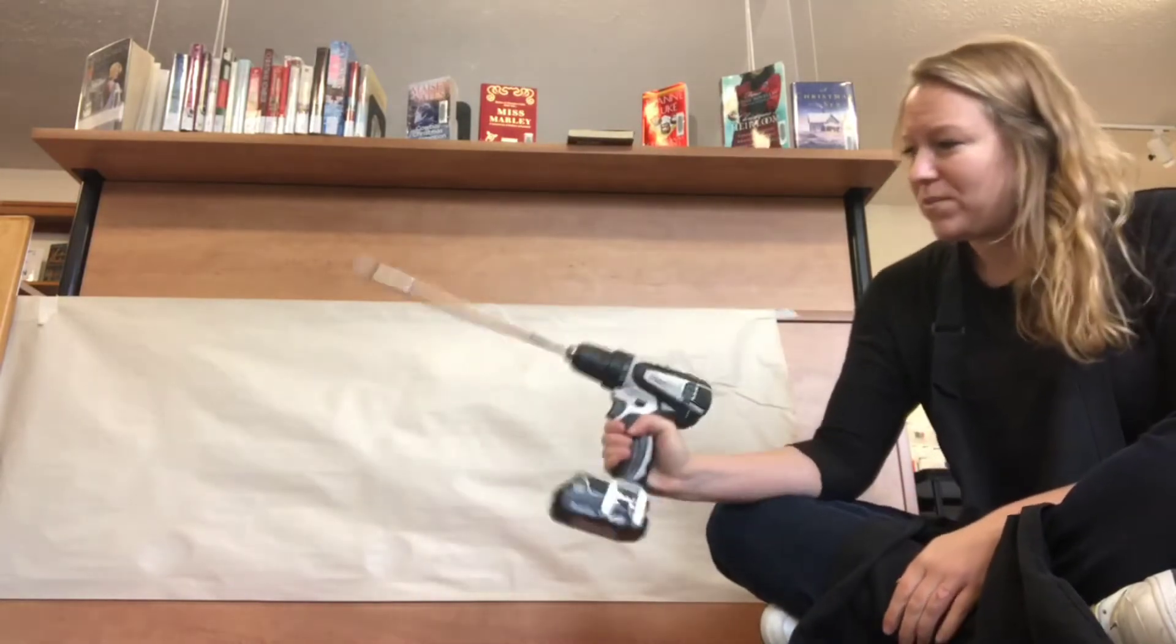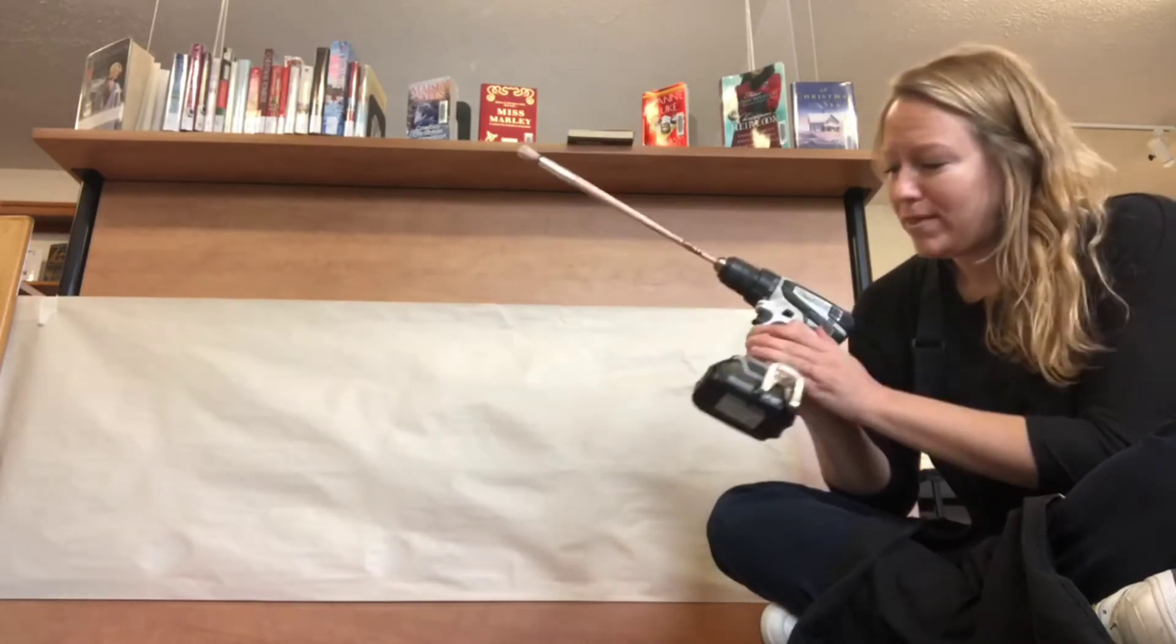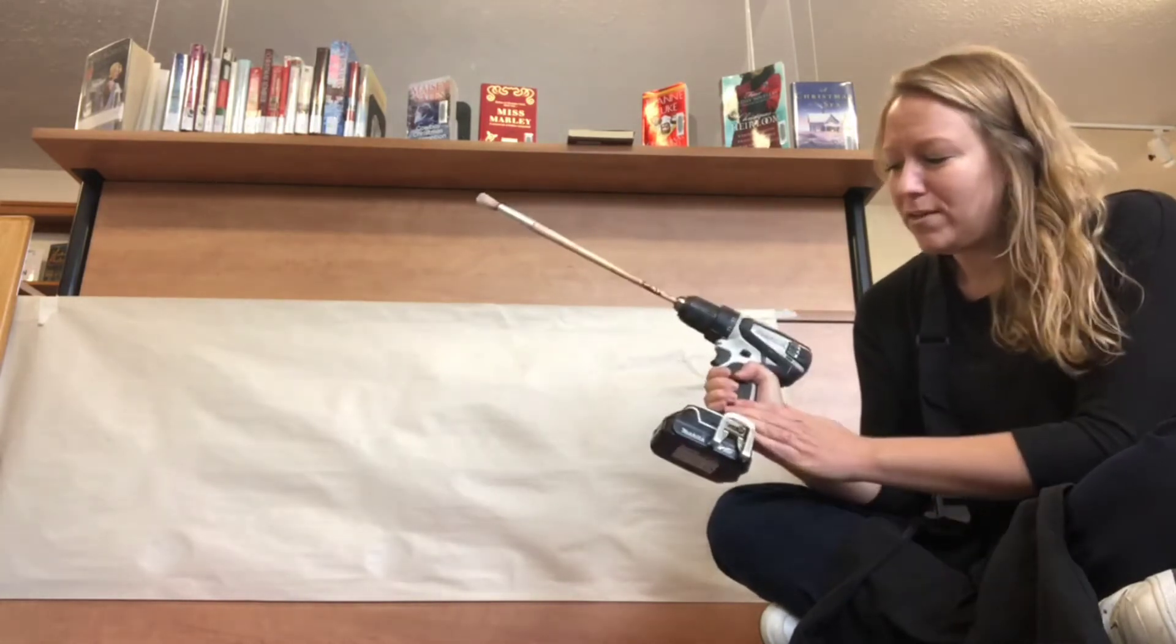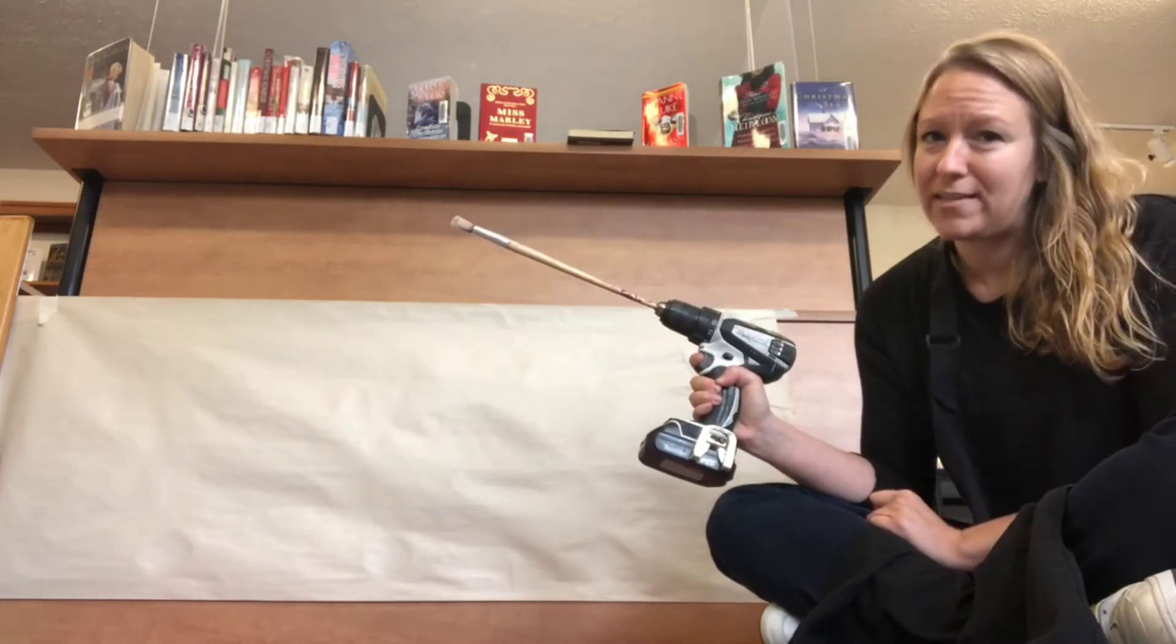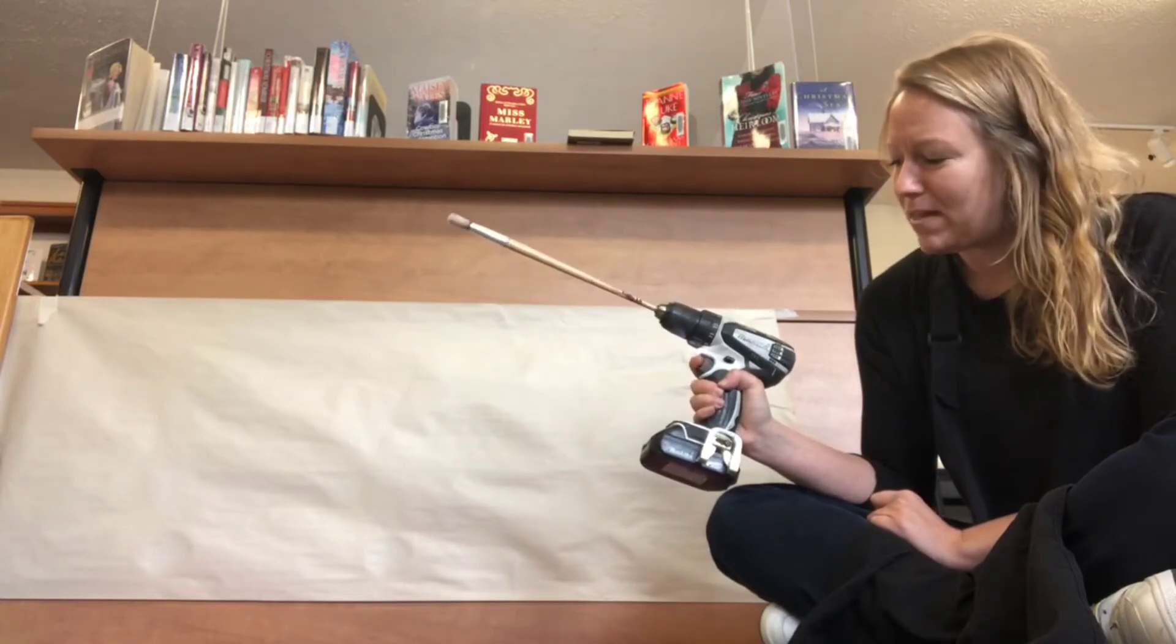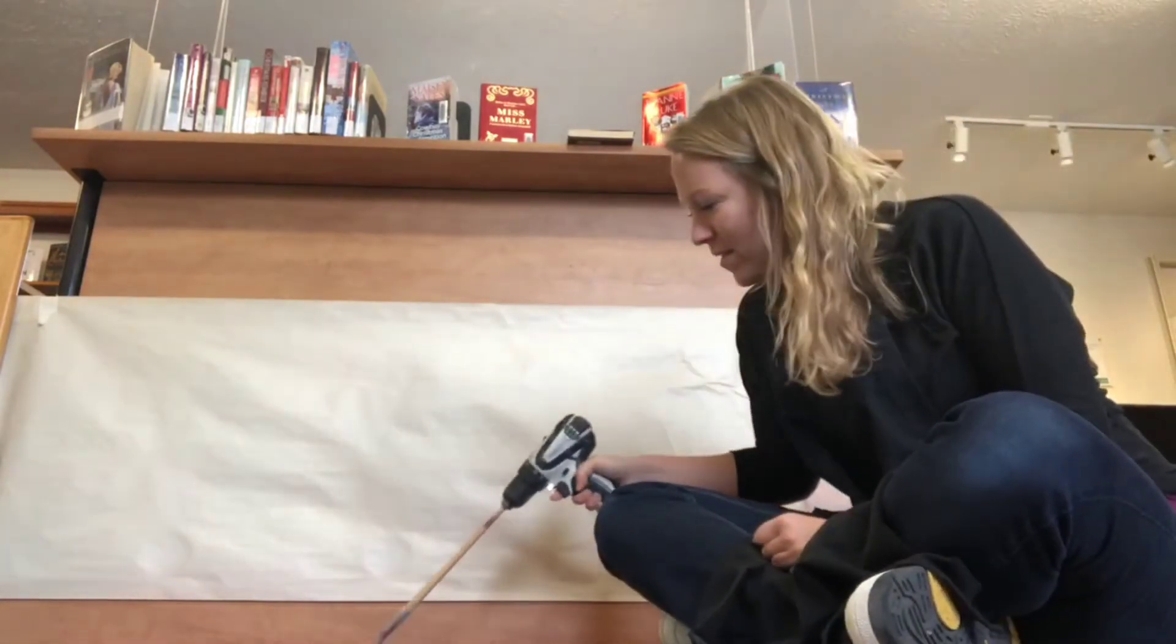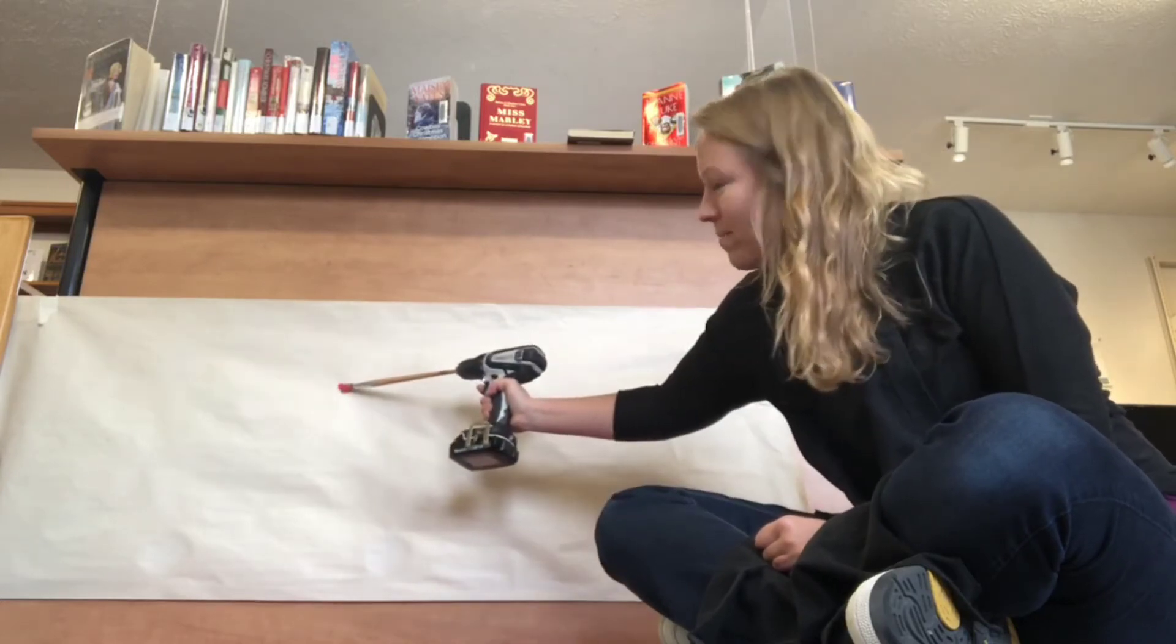When you're painting with your drill, it's important that you just hold on to the handle part. Don't touch the paintbrush while it's spinning or you might hurt yourself. You could do some practice with the trigger. If you press lightly it will go slower, and if you pull a little bit harder it'll speed up. Now we're going to dip it in our paint and see what happens when we put it on the paper.